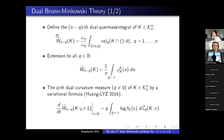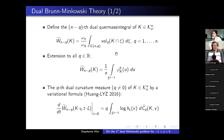The M minus Q-th dual quermassintegral has an integral formula that can be thought of as integrating the Q-th dimensional intersection areas of your convex body over the Grassmannian. There is a natural extension to all real Q using a polar formula, giving something that looks like an integral of the Q-th power of the radial function. When Q equals N, the M minus Q-th dual quermassintegral becomes the volume of a convex body.